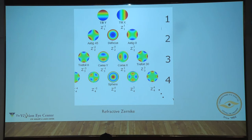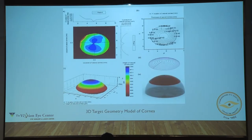Before the Eye Trace was launched, we had the Zernike analysis on the Pentacam, which would differentially tell you the type of astigmatism present in the patient's eye — whatever the contour of the cornea, what is up, what is low. There's also the 3D target geometry model of the cornea from certain machines, but that is something older — now the new machine reads this for you and gives you a report.